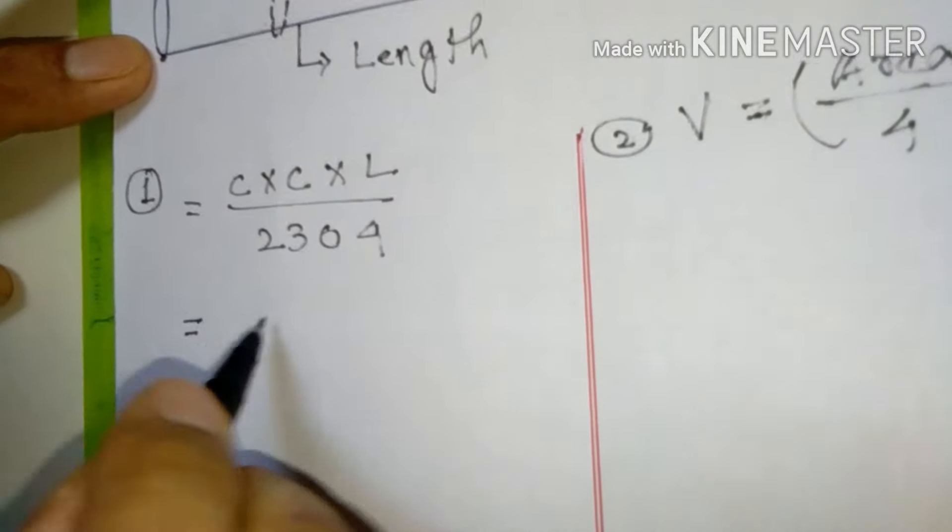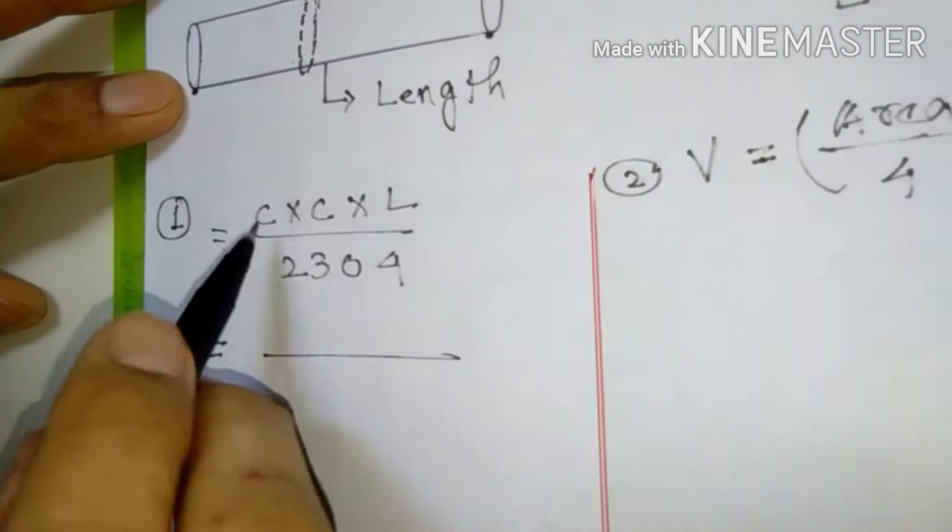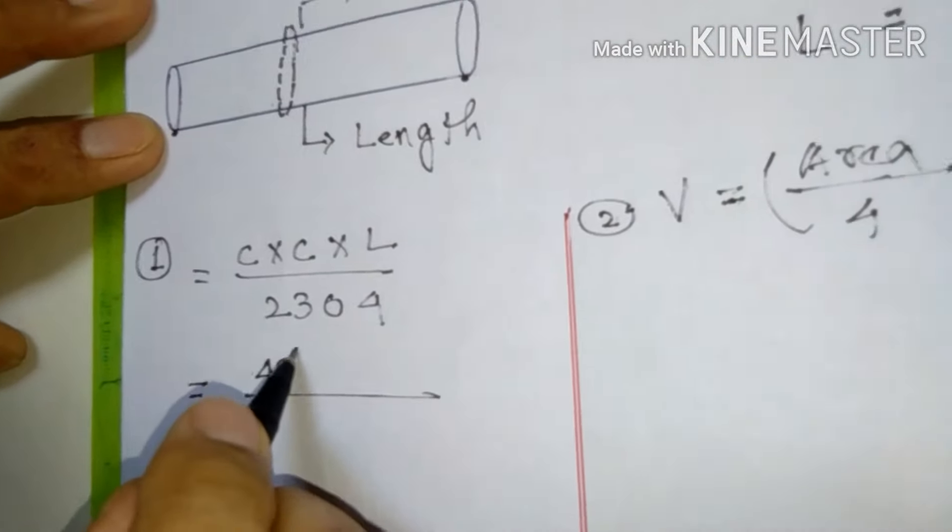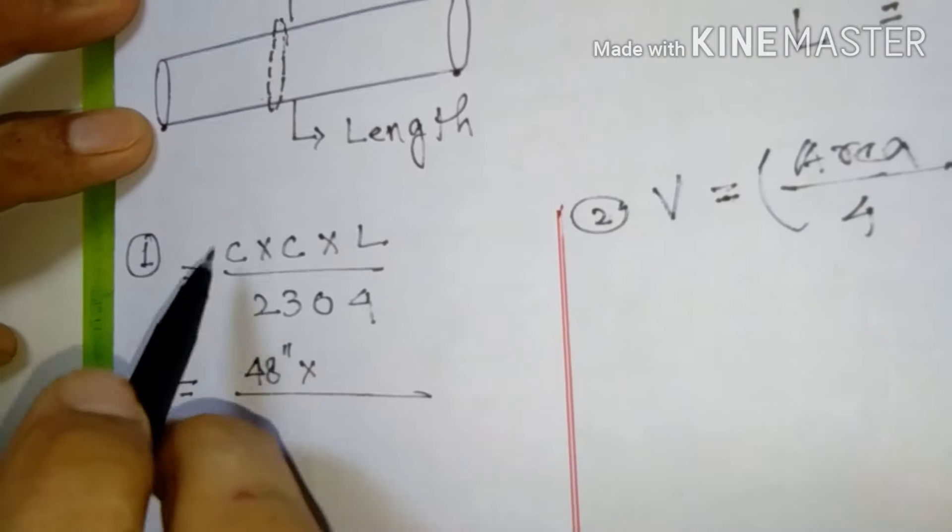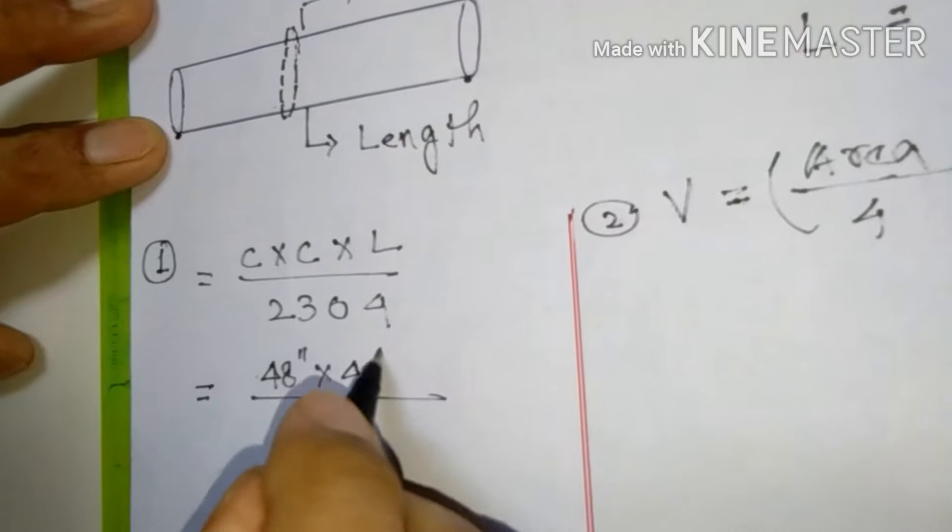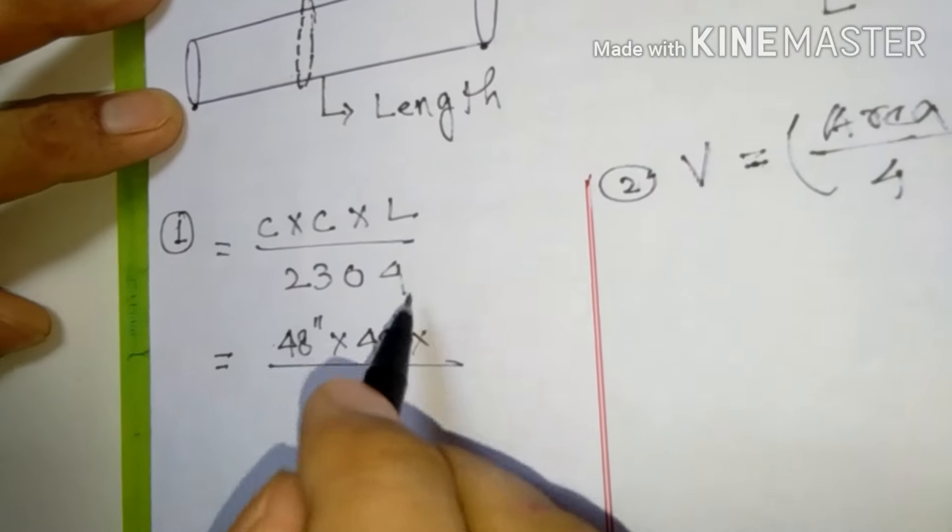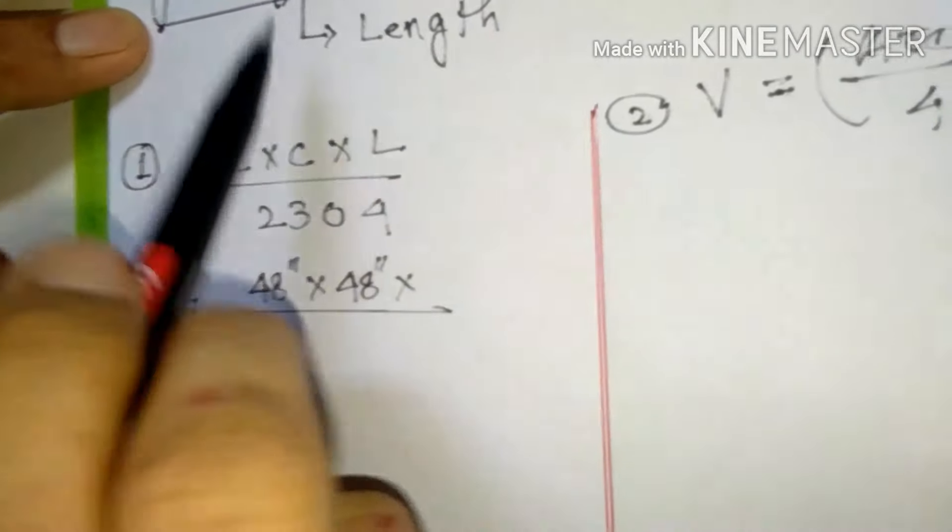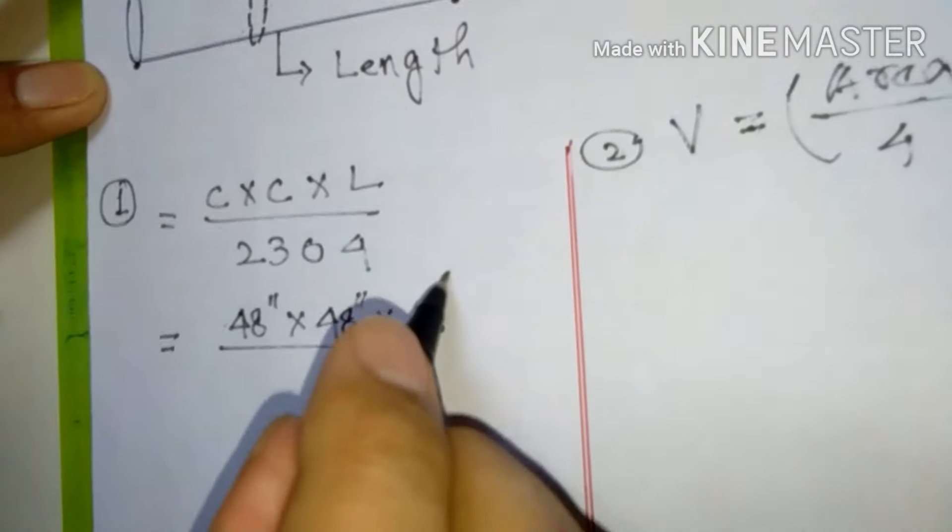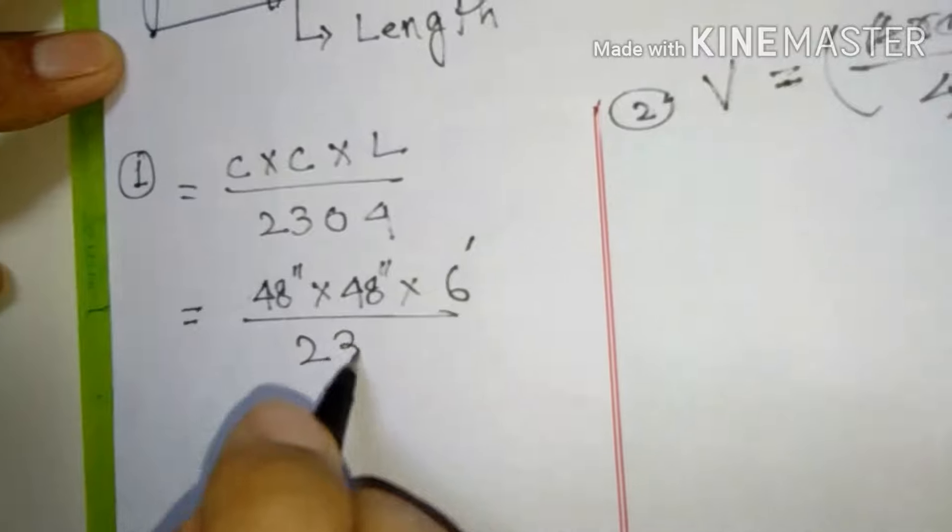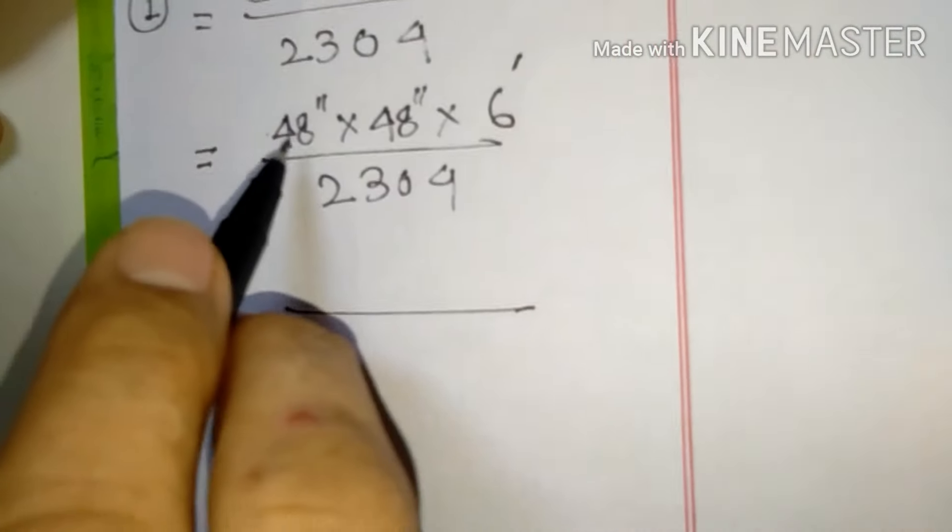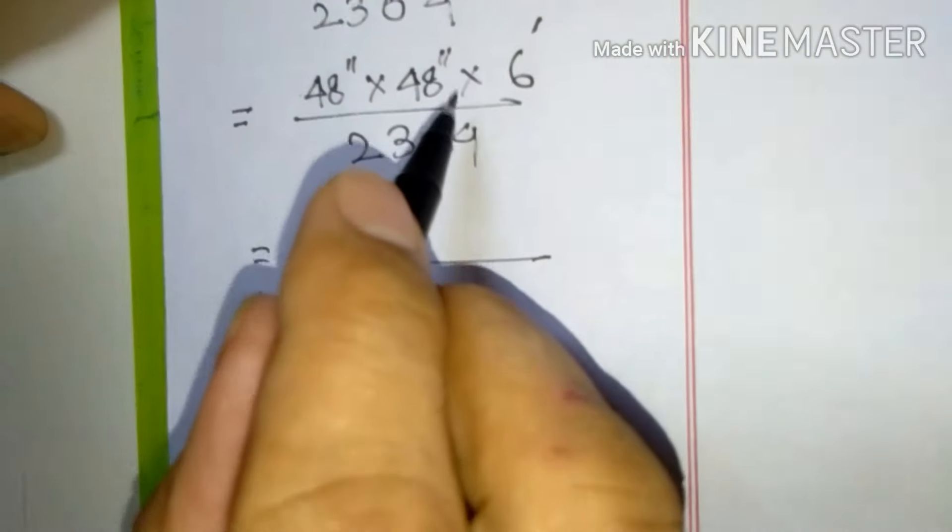Now let us see here. First formula: circumference into circumference into length by 2304. What we are getting? Circumference 48 inches, circumference again 48 inches, into length 6 feet. Now by 2304. Now what we will get? 48 into 48 into 6.